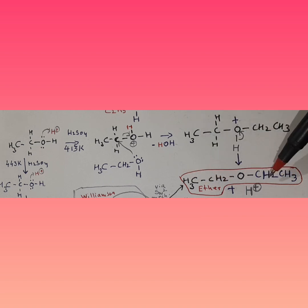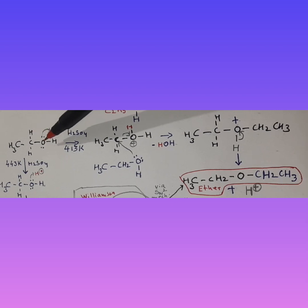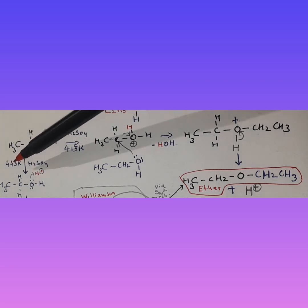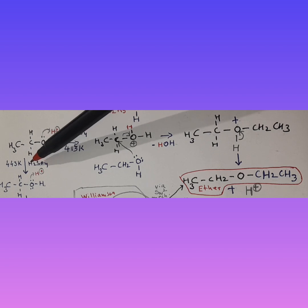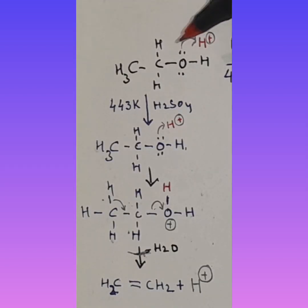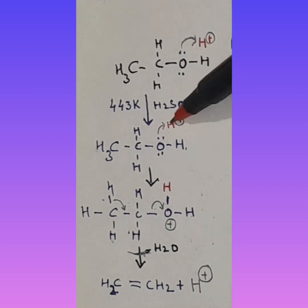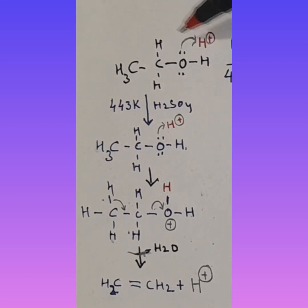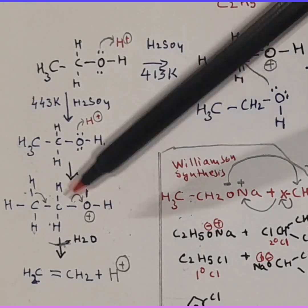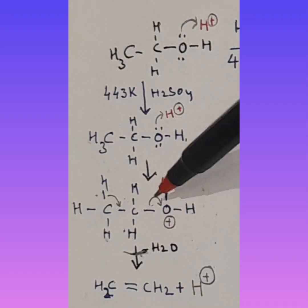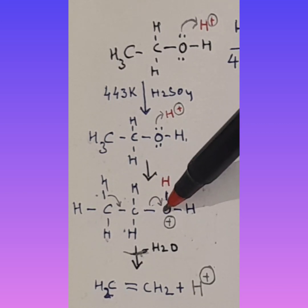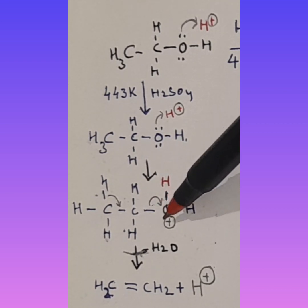This reaction occurs at 413 K. Now, what if we go to 443 K with the same sulfuric acid? The same proton from sulfuric acid causes the same nucleophilic attack by oxygen, forming the same unstable intermediate.